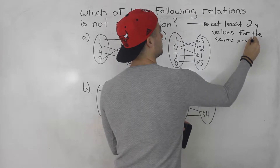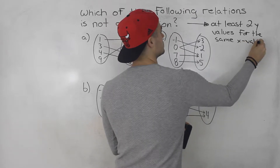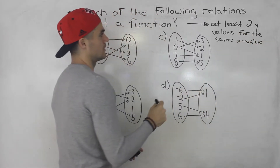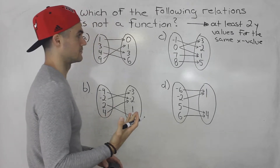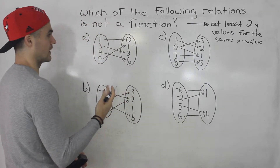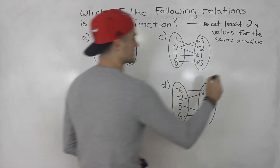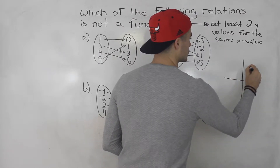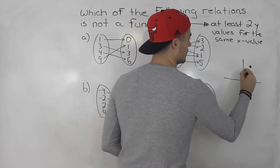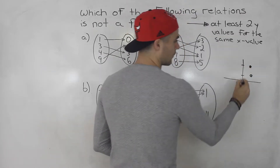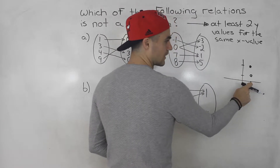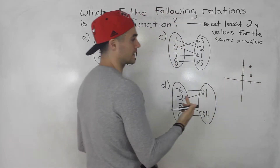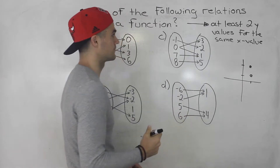So if there are multiple y values for the same x value then it's not a function, because it's not going to pass that vertical line test. Basically if you have two different y values for that one single x value, it's not passing that vertical line test — it's not a function.